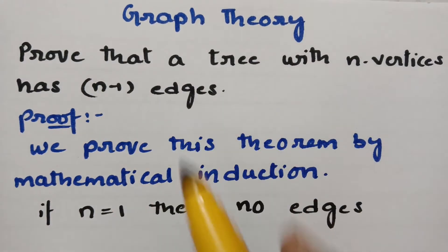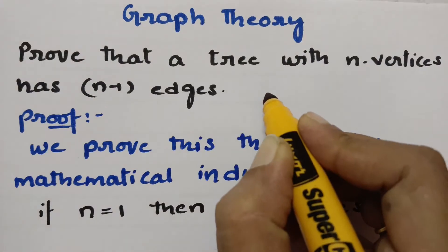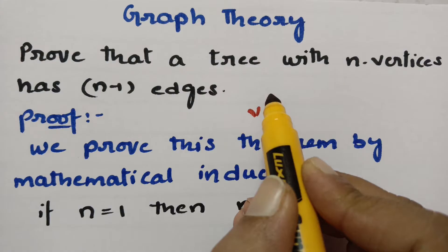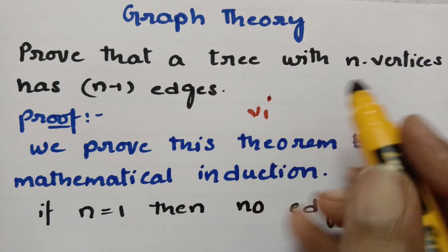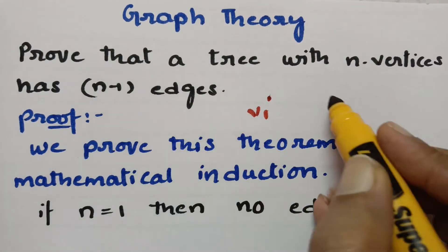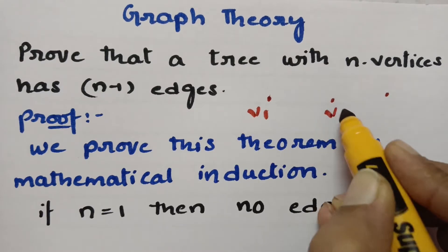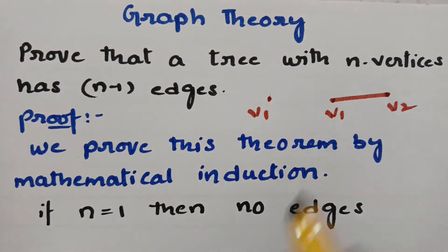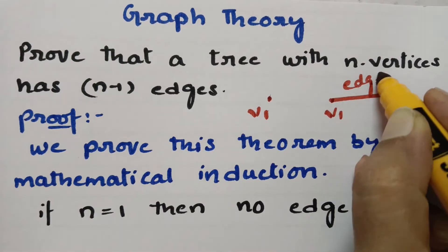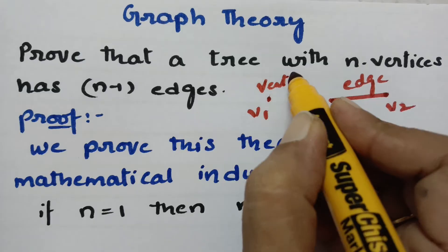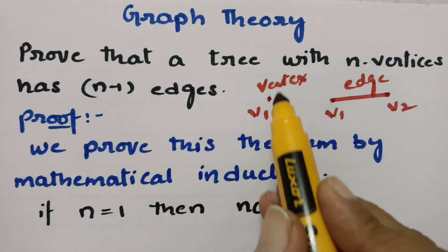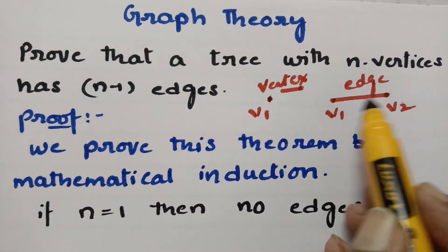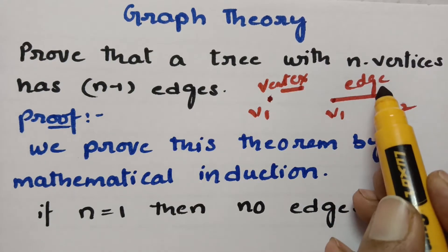So what are vertices and what are edges? A point is nothing but a vertex. If you have two vertices, v1 and v2, and you connect these two vertices, that connecting line is nothing but the edge. So a point is a vertex and the connecting line between any two vertices is an edge.